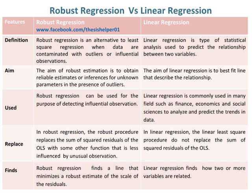In robust regression, the robust procedure replaces the sum of squared residuals of the OLS with some other function that is less influenced by unusual observations. Whereas in linear regression, the least squares procedure does not replace the sum of squared residuals of the OLS.